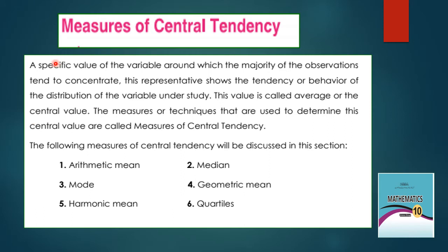Exercise 6.2 topic: Measure of Central Tendency. The specific value of a variable around which the majority of observations tend to concentrate is called an average or central value. The measures used to determine the central value are called measures of central tendency. The following measures will be discussed: arithmetic mean, median, mode, geometric mean, harmonic mean, and quartile.